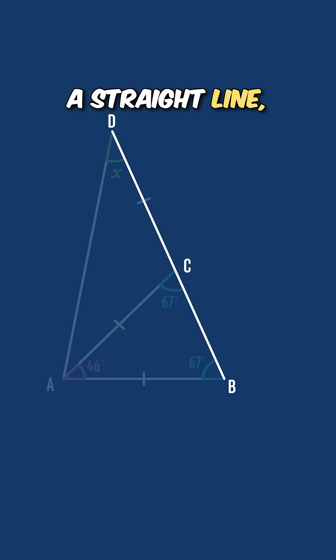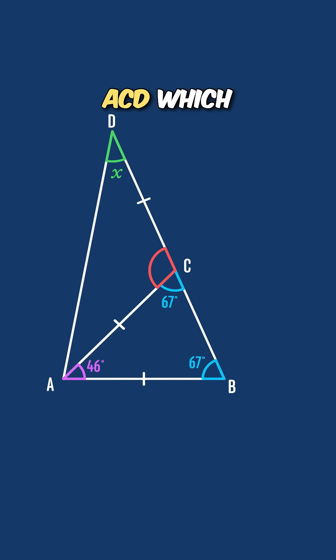Now since BCD is a straight line we can work out the angle ACD which is 180 minus 67 degrees, or 113 degrees, because angles on a straight line always add up to 180 degrees.